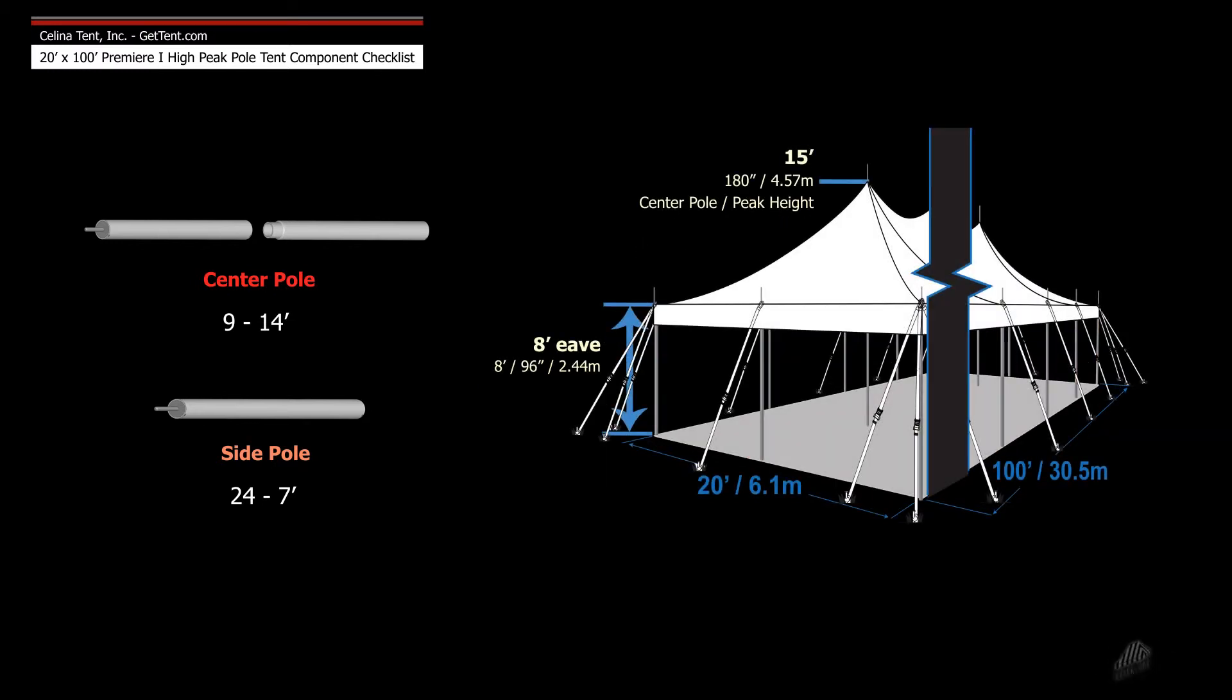If the desired eave height is 8 foot instead of 7 foot, the side poles will be 8 foot tall with 15 foot center poles.